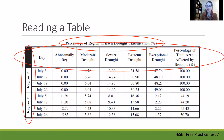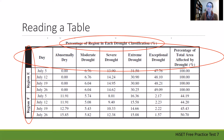Up at the top are all the headers for the different information: the day, whether it was abnormally dry, moderate drought, severe drought, extreme drought, exceptional drought, and then the total percentage of area affected by drought. In region E the dates are July 5th, 12th, 19th, and 26th, and then those same days repeat for region F.